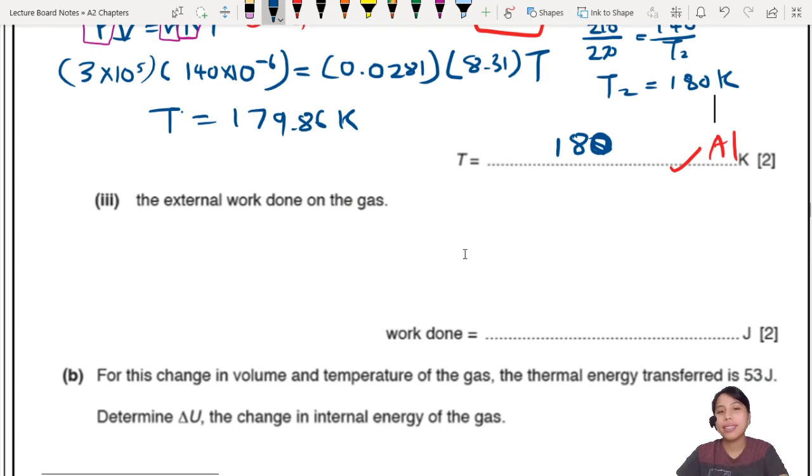Moving on. The external work done on the gas. Work done on gas. That's the W. You may think of first law of thermodynamics, which is delta U equals to Q plus W. But hang on a second, we don't know anything about U or Q. That is later. So no, we cannot use the equation. You need to remember from AS, if you have a constant pressure, you can use this equation. W equals to constant pressure times change in volume.